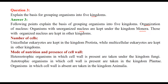The second basis is the number of cells. Unicellular eukaryotes are kept in the kingdom Protista, while multicellular eukaryotes are kept in other kingdoms.